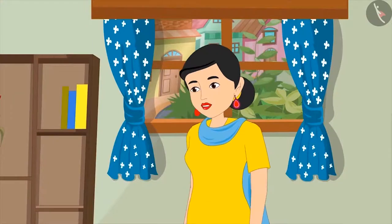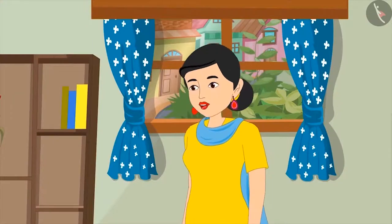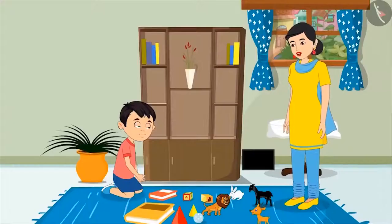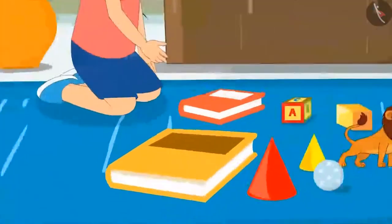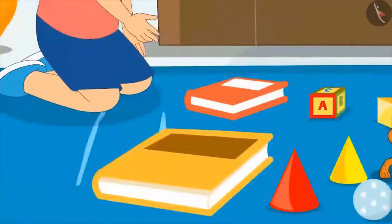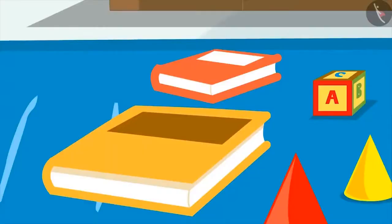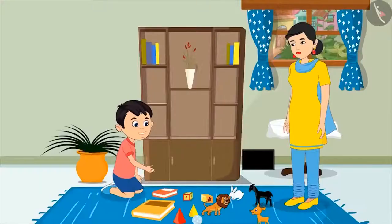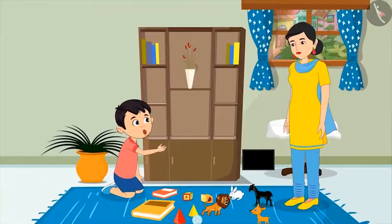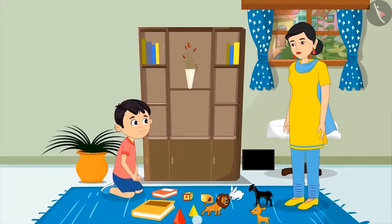Keep both your books in your cupboard according to their size. This means keep the big book at the bottom and keep the small book on it. Can you help me do this?